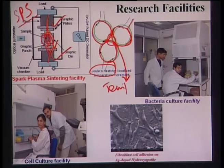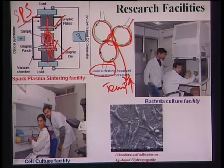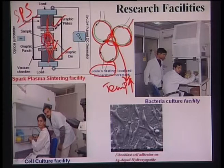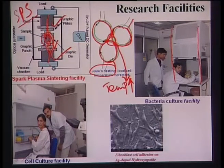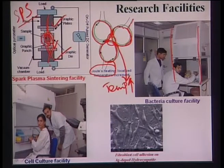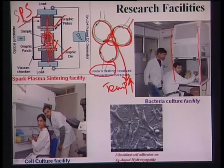The temperature increases to a high value and that helps in enhanced mass transport. This is the bacterial culture facility — a vertical laminar flow where you can culture different bacterial strains like E. coli bacteria or staphylococcal species and so on.